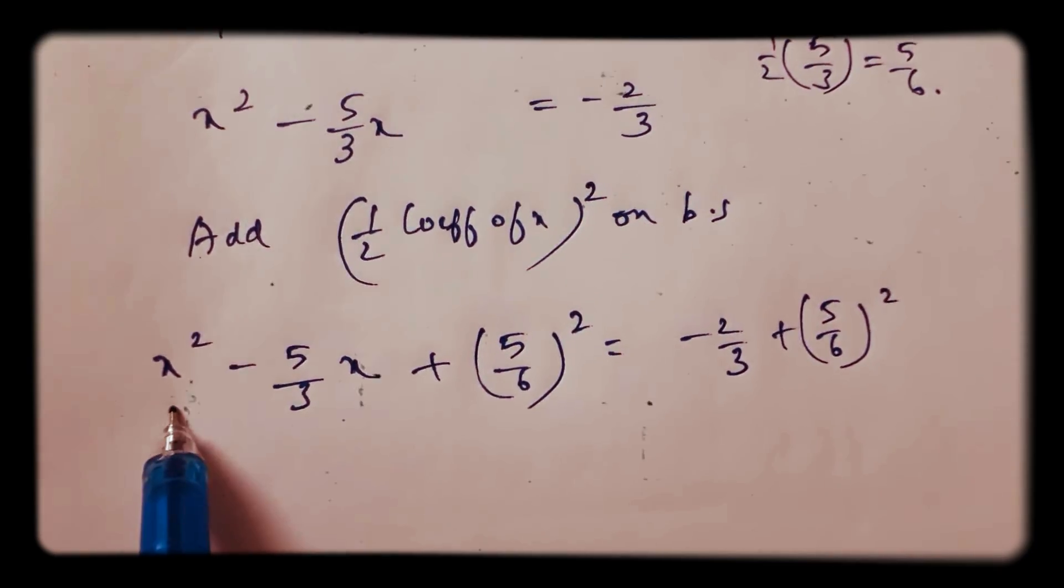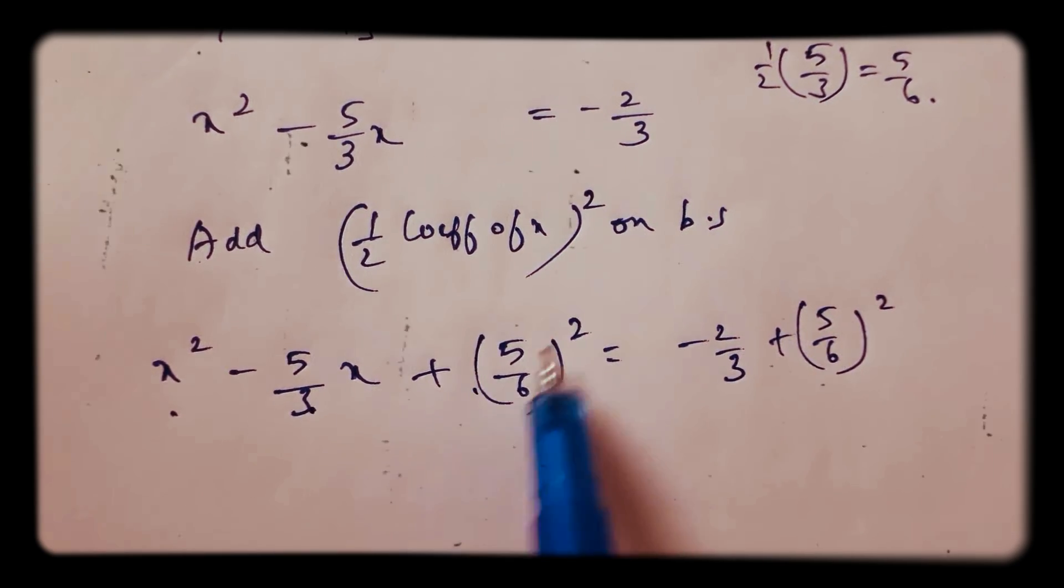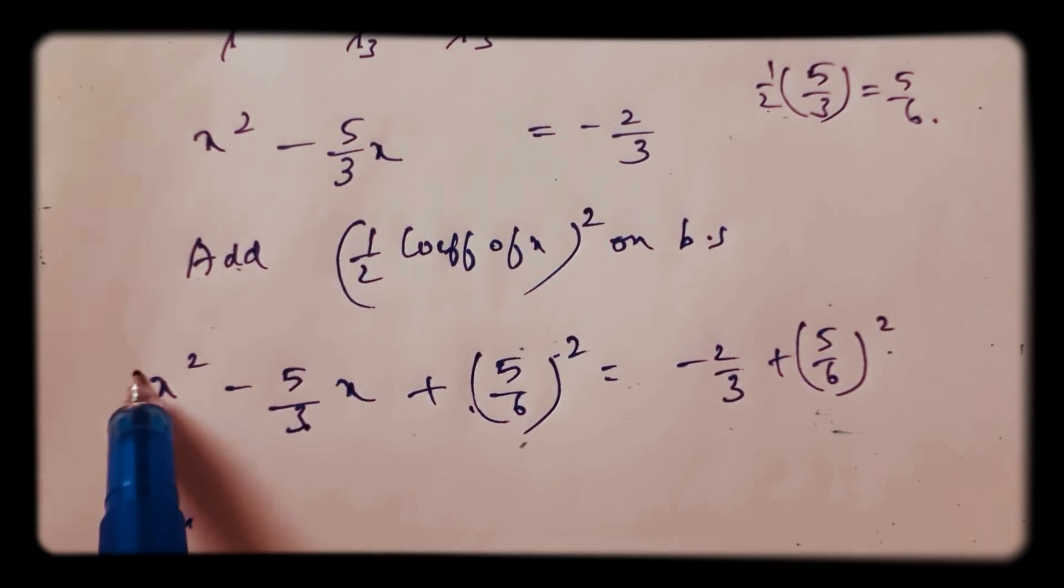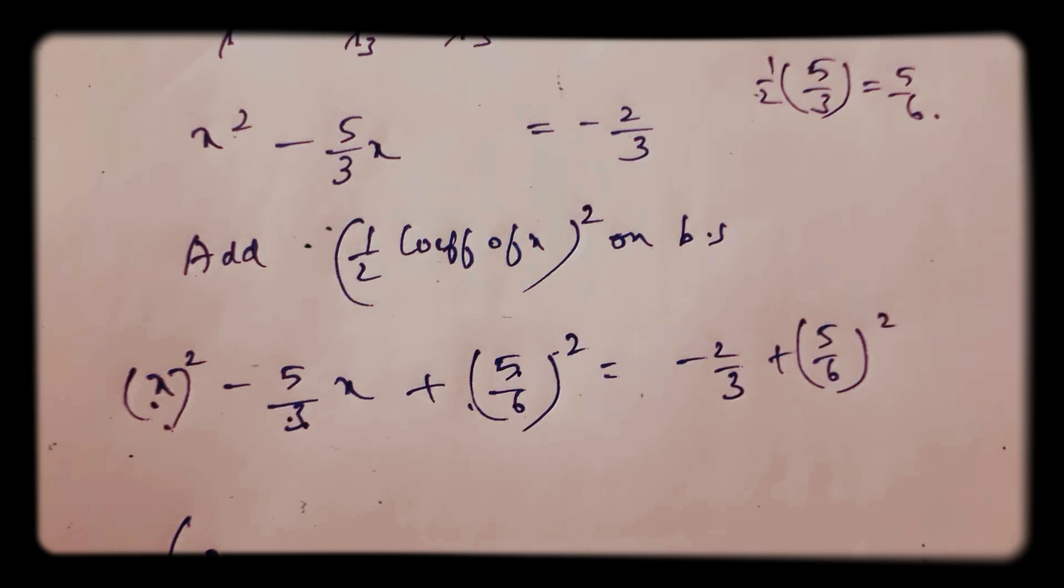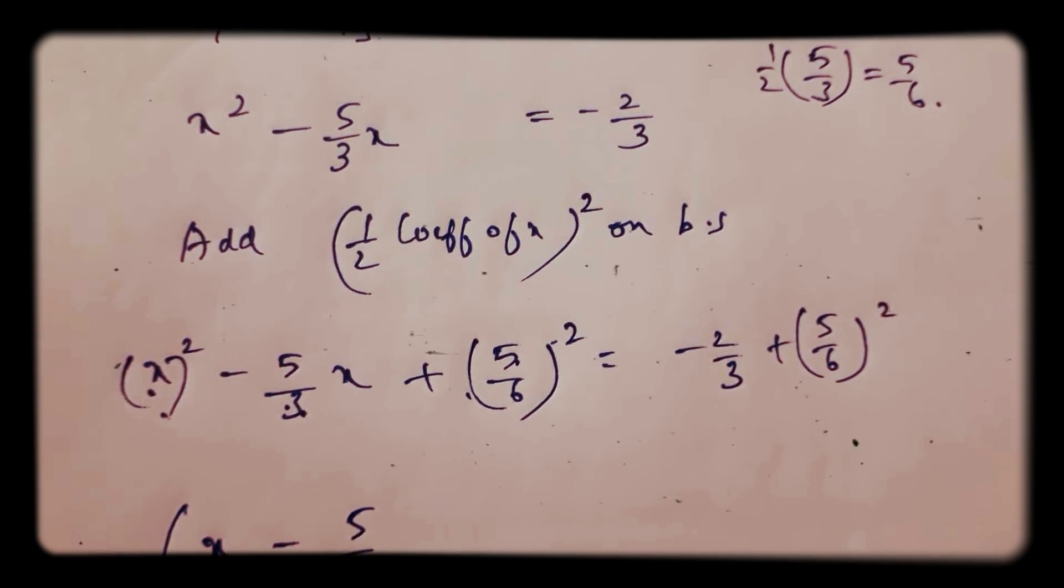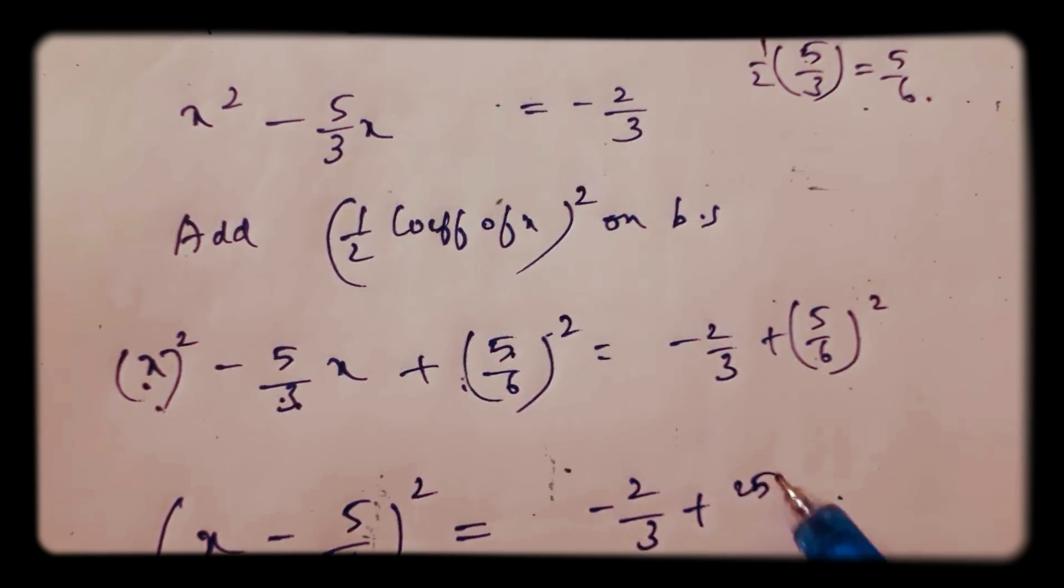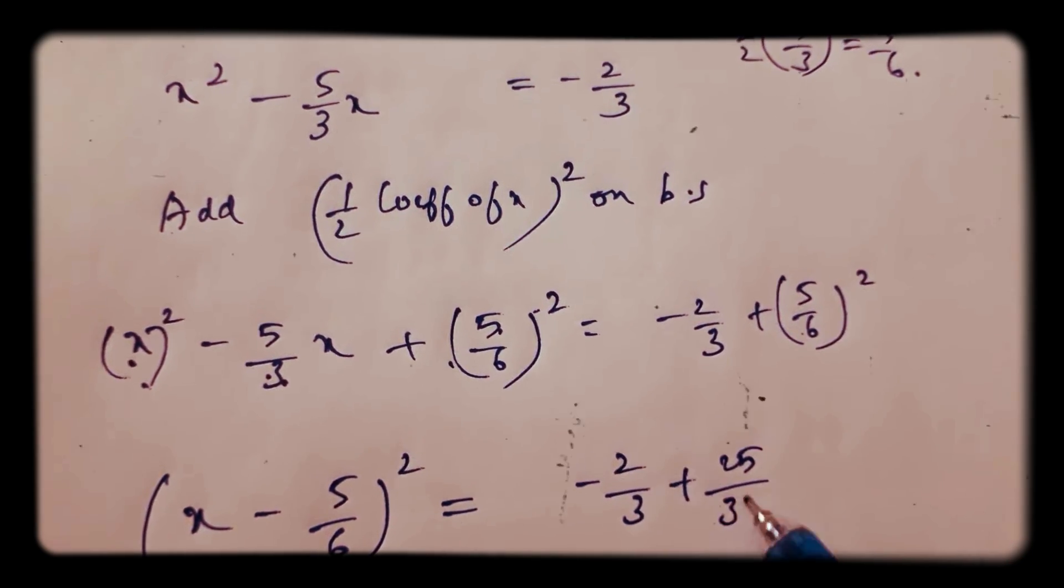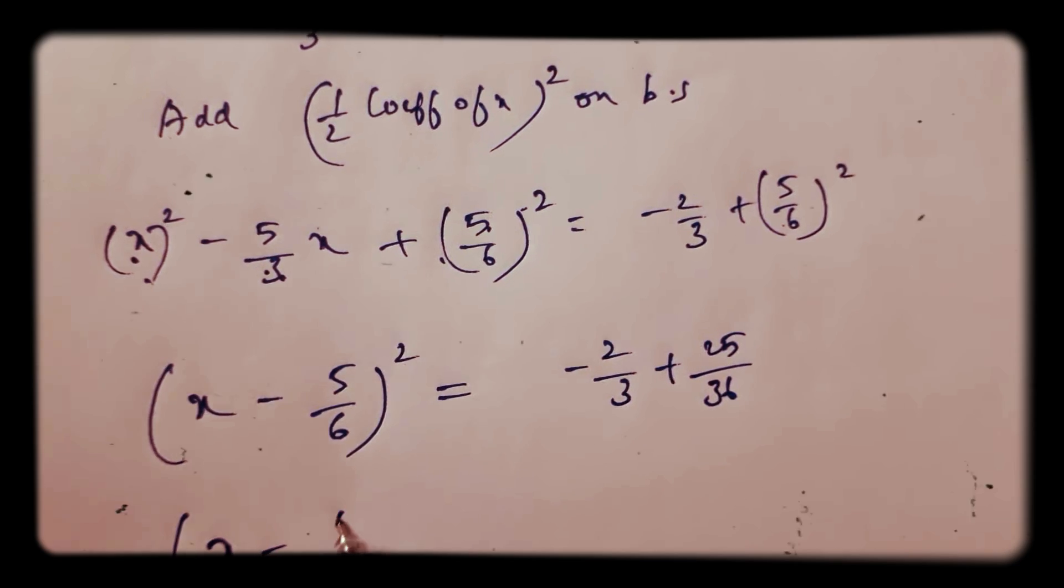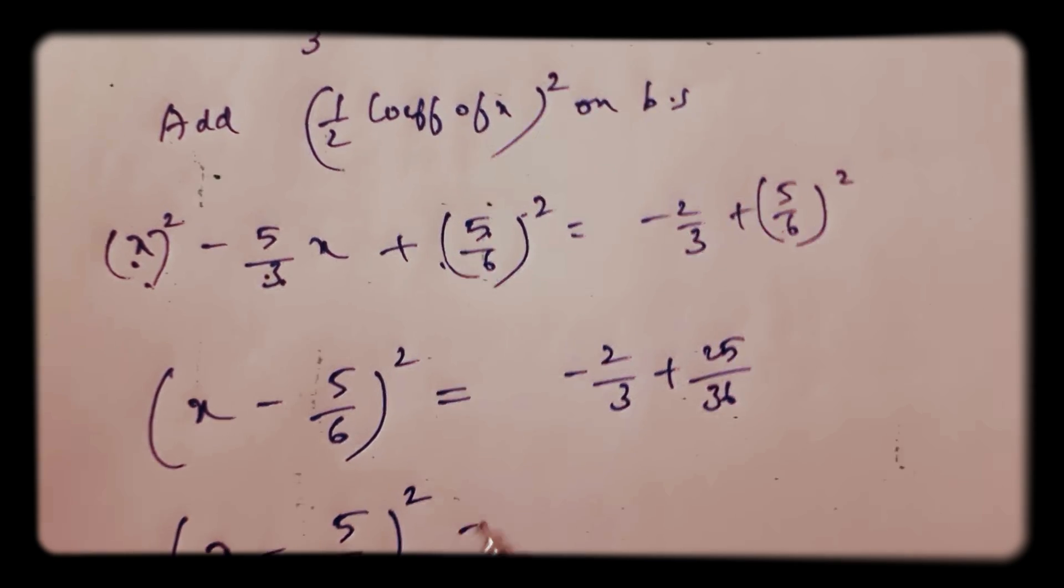It is in the form of a square minus 2ab plus b square. So a square minus 2ab plus b square. x minus 5 by 6 whole square. Minus 2 by 3 and this is 25 by 36. So x minus 5 by 6 whole square.